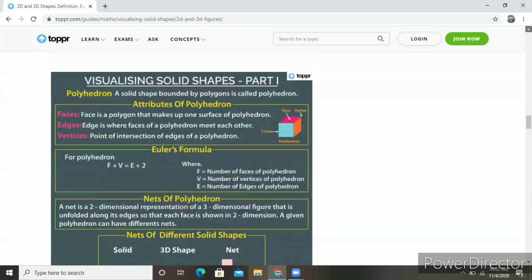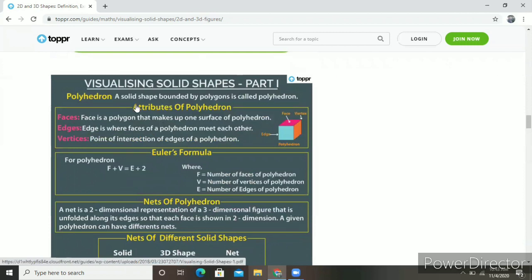Let's see what comes from the visualizing solid shapes part 1. Face is a polygon that makes up the surface of a polyhedron. Edge is where the faces of a polyhedron meet each other. Vertex is the point of intersection of edges of a polyhedron.